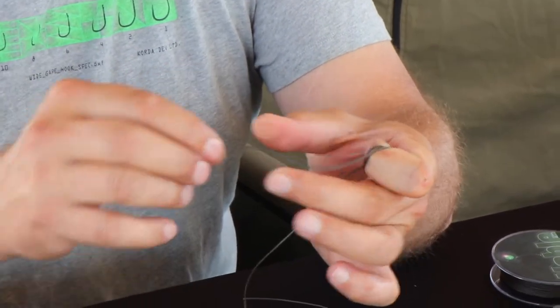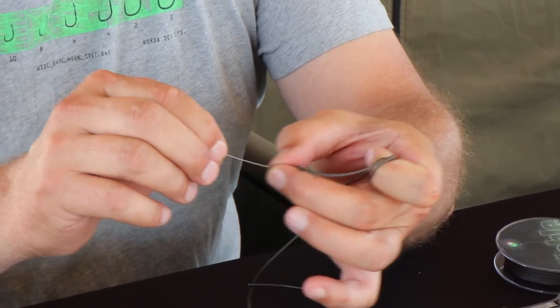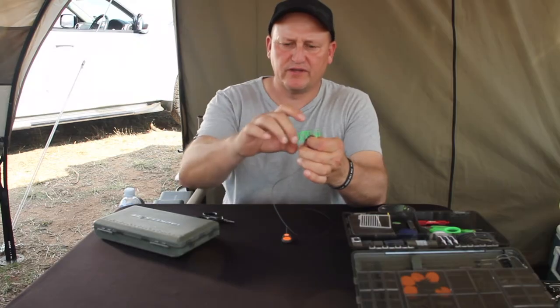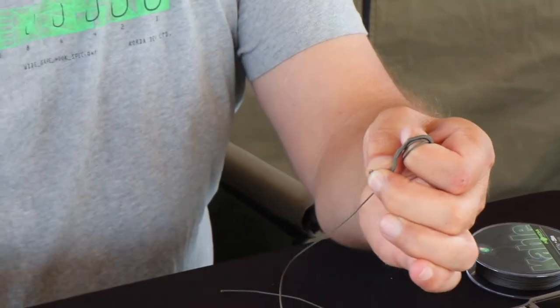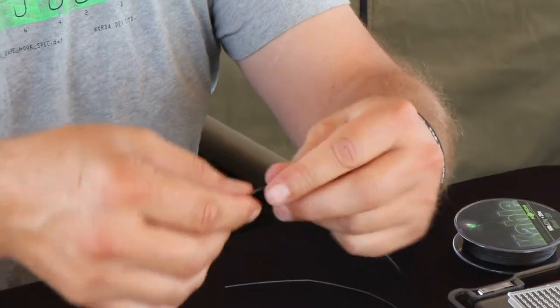So that the lead doesn't slip, all I do is push it out up to a point and just clip it off with my nails. Then I just straighten out the line again.